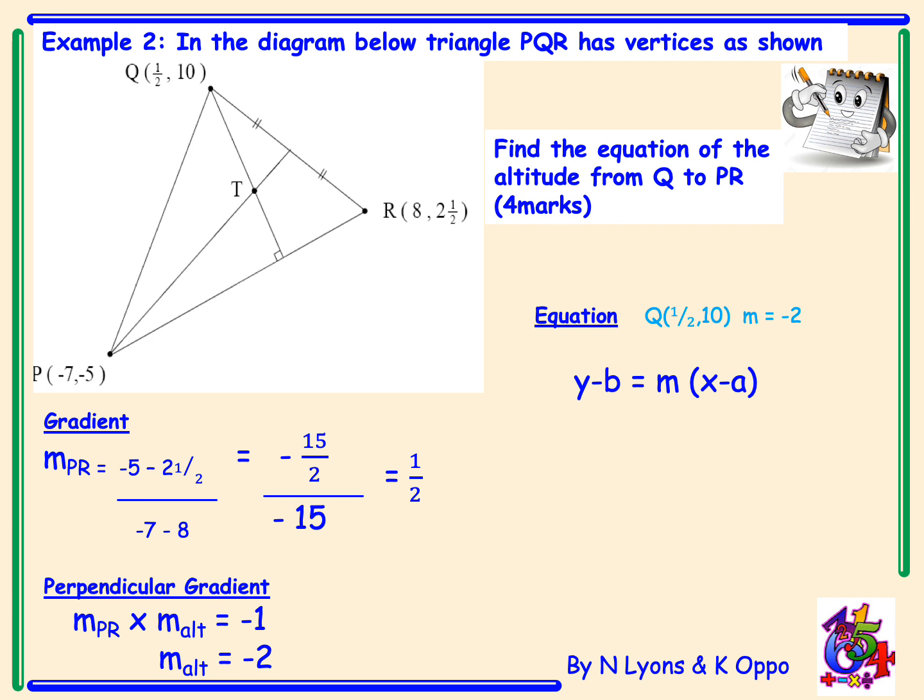Again, starting with y minus b, insert in our values. Expand your bracket to get negative 2x and be careful with your double negatives. Negative 2 multiplied by negative 1 half will give us plus 1. Rearrange your straight line equation to get 2x plus y equals 11.